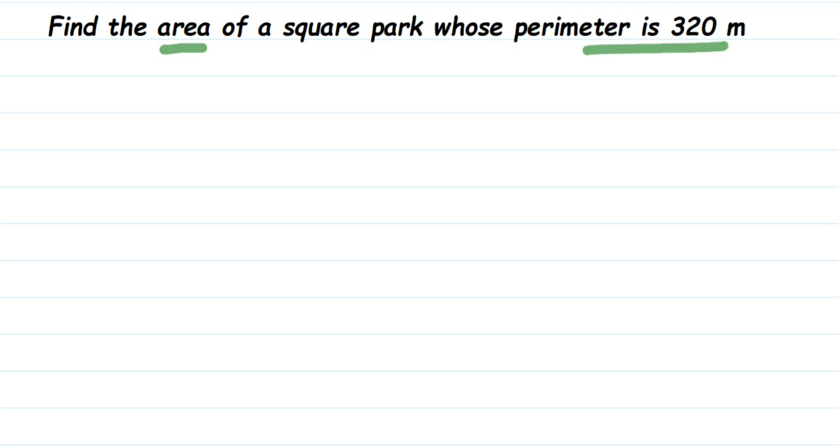So how do we find this out? We have to find the side to get the area. To get the side, we're going to use the perimeter formula, and then using the side we're going to find out the area.